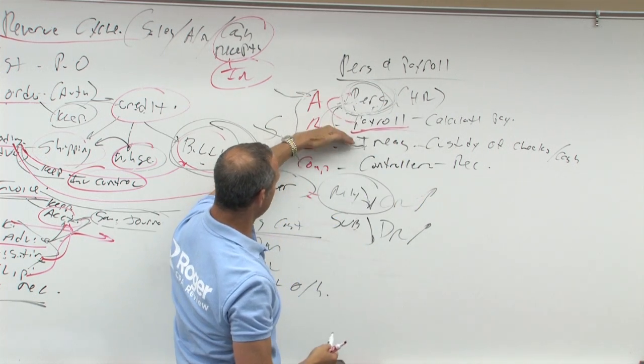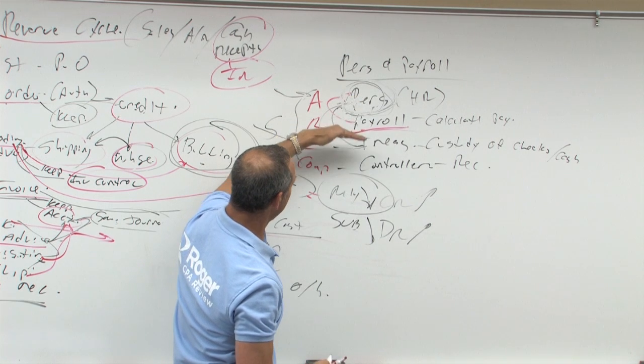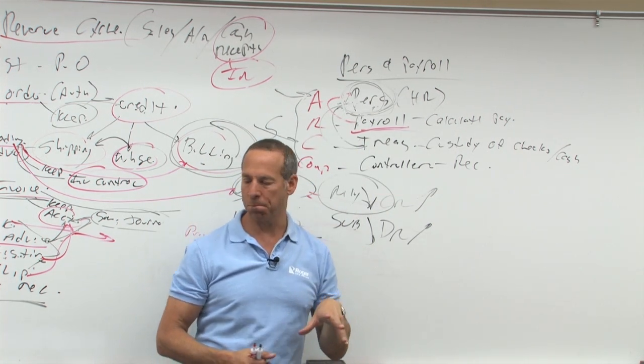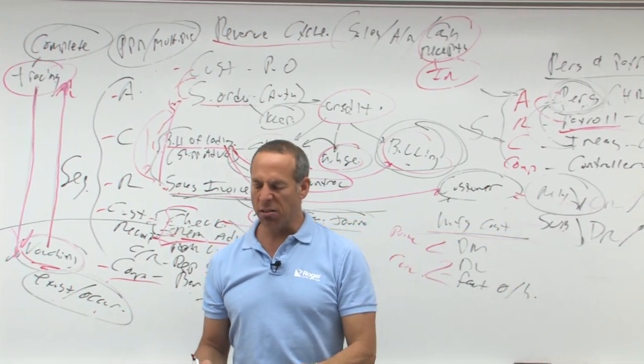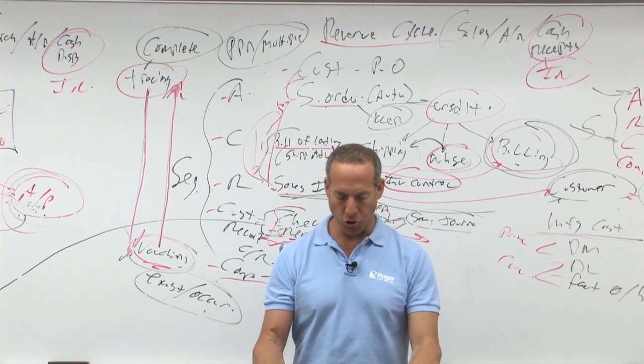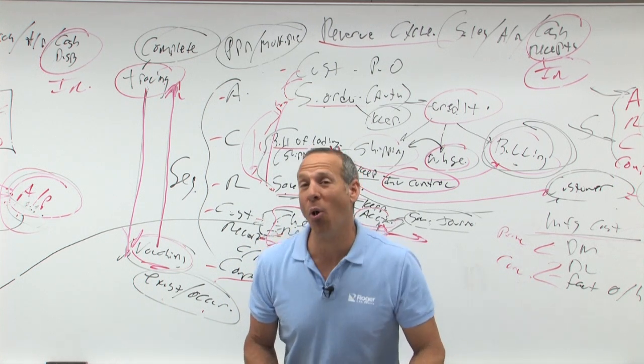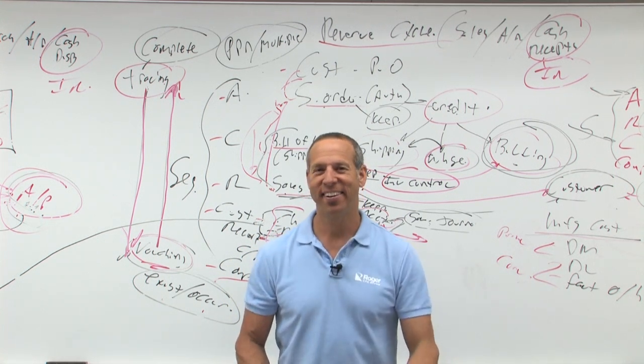This is authorization, recording, custody, comparison, authorization, recording, custody, comparison, all of these should be segregated. A, personnel, love it, treasurer, no, controller, no, payroll, no, best answer is what? A, as in attaboy, apple, very nice.